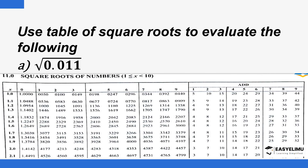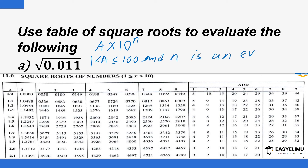Our first example: use tables of square roots to evaluate the following. You are restricted to using the tables of square roots, though you can also use a calculator or other methods. Just like finding square roots of numbers greater than 100, we first write the number in the form a times 10 to the power n, such that a is a number between 1 and 100 and n is an even number.